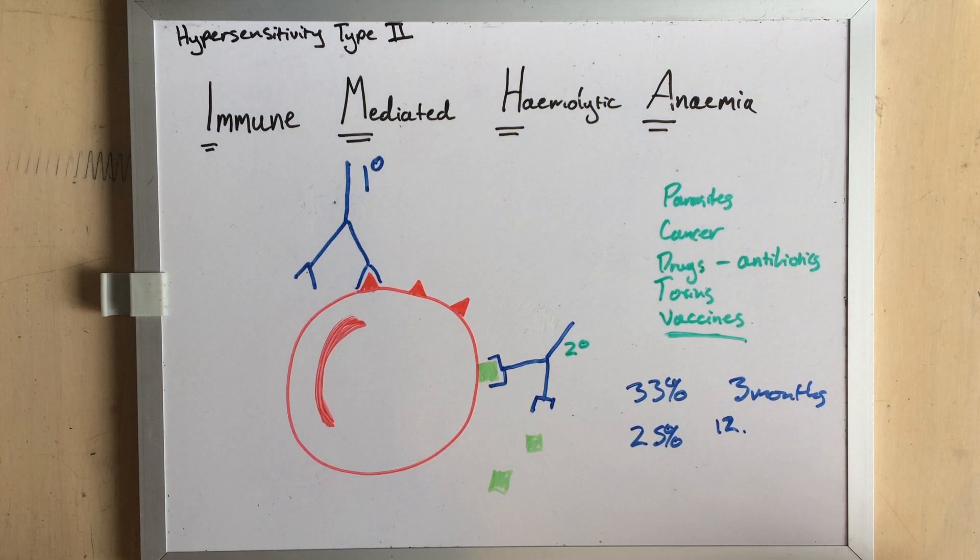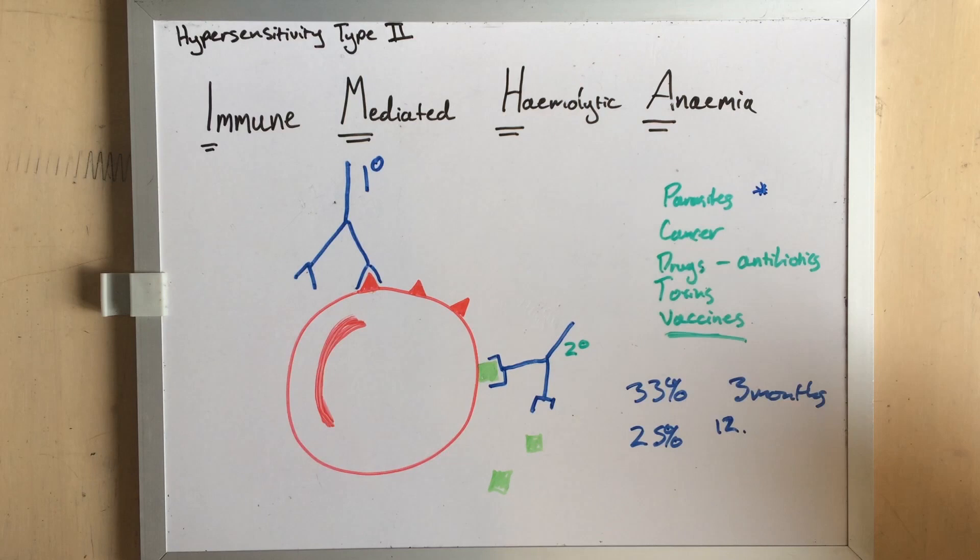In cats, it's a little different. Most of the cases I've seen in cats have had a bloodborne parasite like Mycoplasma haemophilis. As far as other predispositions go, Cocker Spaniel dogs are very predisposed, but also poodles and their various crossbreeds. But any animal with an immune system can develop IMHA.